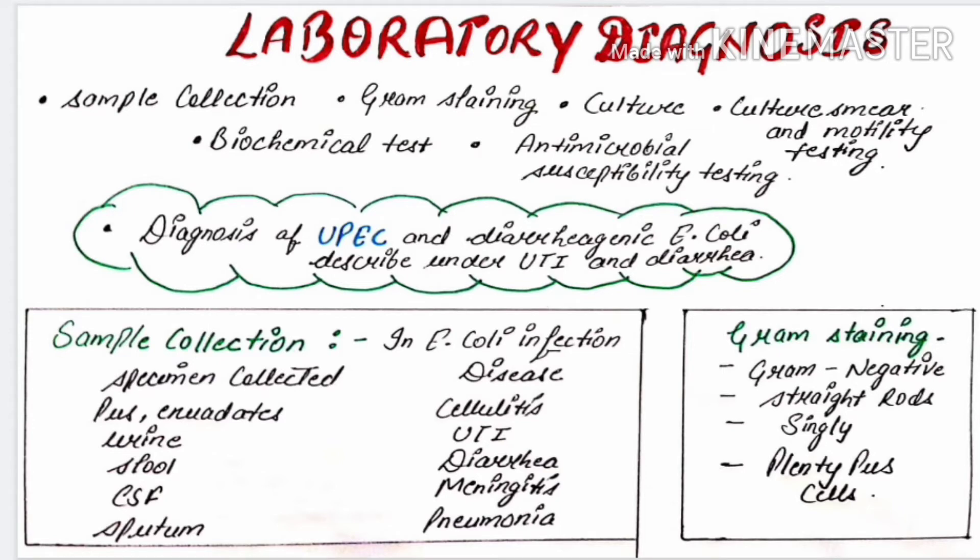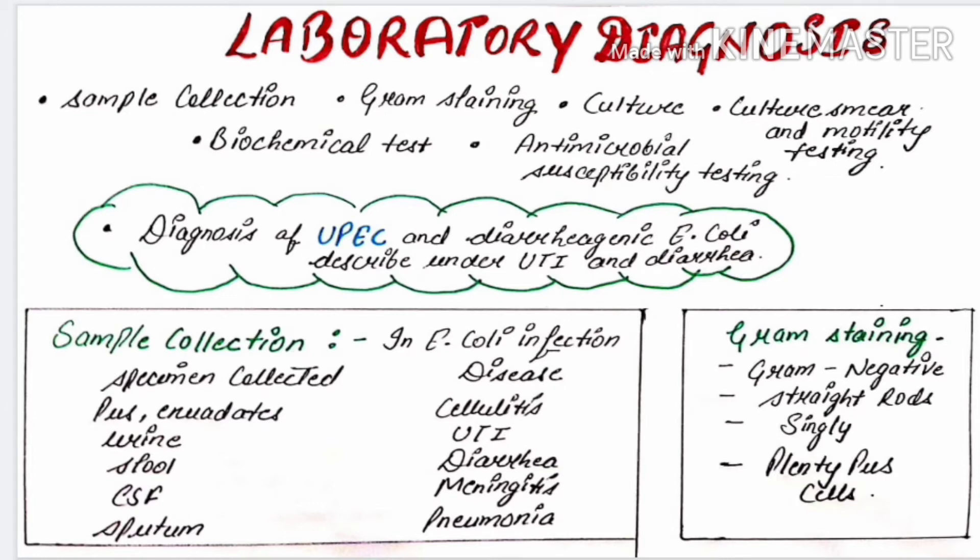Now we will focus on gram staining. In the gram staining, E.coli appear as gram-negative bacilli, straight rods, arranged singly, and plenty of pus cells are found in the direct smear.